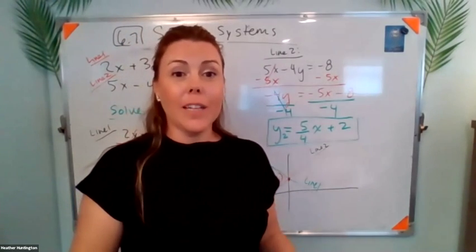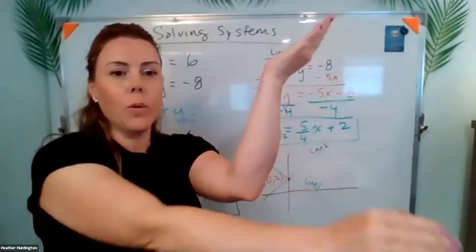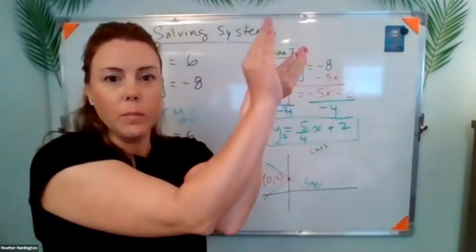They end up being the same line. So they might look different. So you have one line, then you have another line that looks like it's a different one. But then when you graph it and do everything, it's actually the same line.